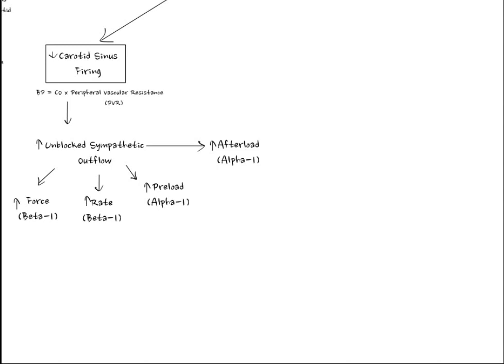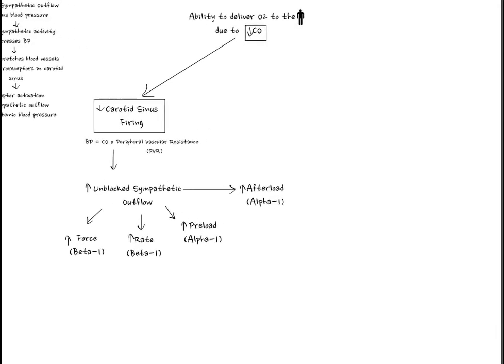Preload is determined by blood volume and the capacitance of the venules, or their size. Afterload is more determined by peripheral vascular resistance, or the size or radius of the arterioles.